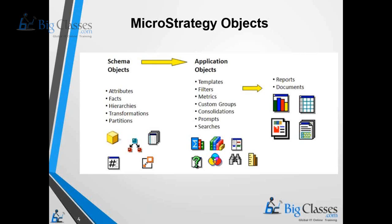Once the application object development is done, as a developer, you finally create the reports, documents, and dashboards which would be accessed by end users to analyze the data. At a broader level, there are two roles: the Architect role, where you populate the metadata and create schema objects mapped to tables and columns; and the Developer role, where you create application objects using schema objects for their definition, and ultimately build reports, documents, and dashboards.